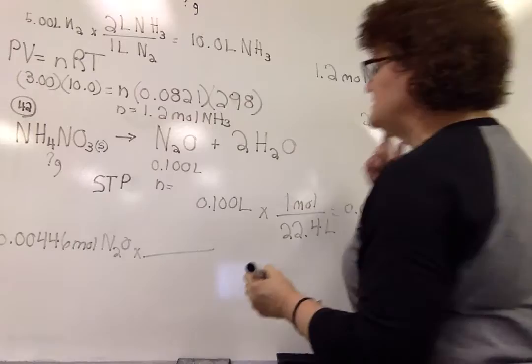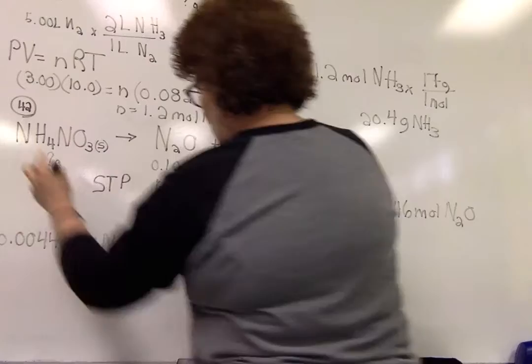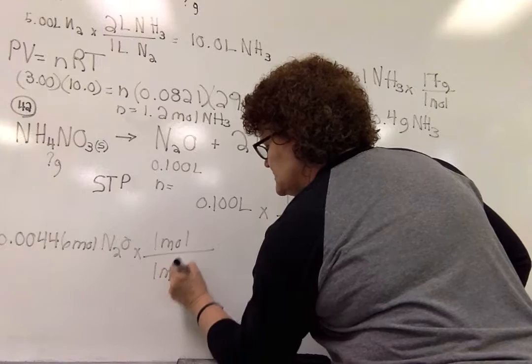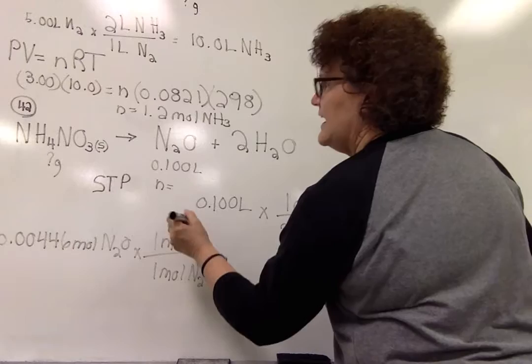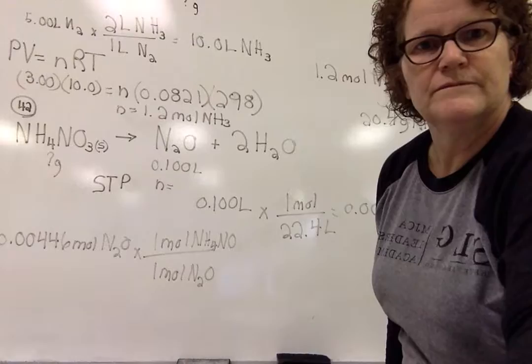and then we're going to say, well, what is the balanced equation relationship between these amounts? And it happens to be 1 to 1. So it's 1 mole to 1 mole. So this is N2O, and this is ammonium. So this is the NH4NO3. Oops. Sorry, my camera died on me. NH4NO3.